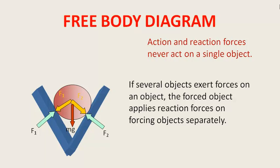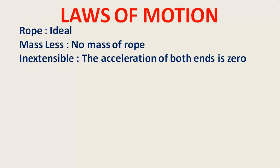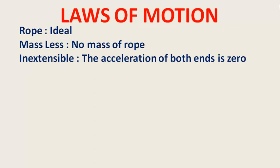Free body diagrams को थोड़ा और detail में समझना पड़ेगा। इससे मिलती-जुलती एक चीज़ होती है — connected motion। इसमें दो bodies के बीच में rope से खींचते हैं। हम लेते हैं कि rope ideal है — यानी massless। Massless से फर्क ये पड़ेगा कि acceleration निकालते समय rope के mass को नहीं लेना पड़ेगा। दूसरी property — rope inextensible है, मतलब acceleration of both ends is same।